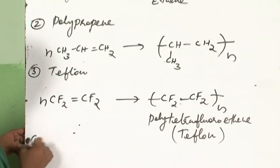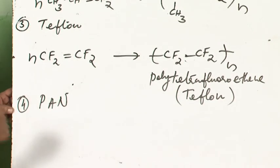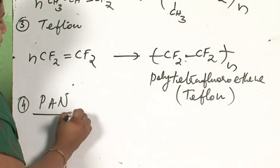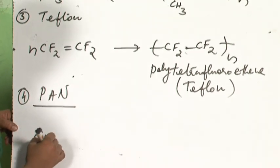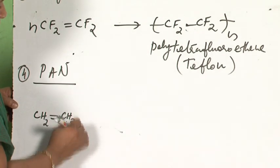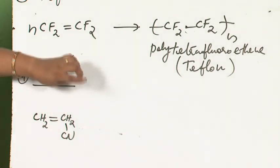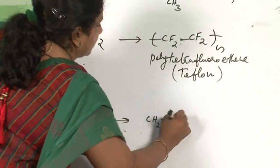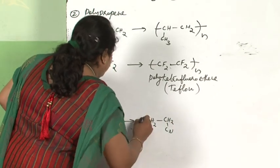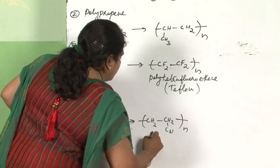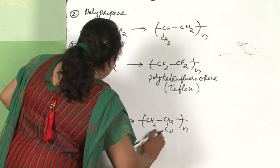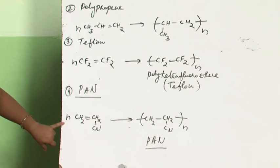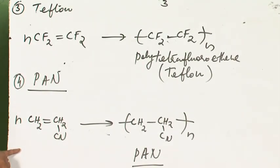The next polymer is PAN — polyvinyl cyanide or polyacrylonitrile. The monomer is vinyl cyanide (acrylonitrile): CH2=CH-CN. When N molecules polymerize, you get -[CH2-CH(CN)]n-, which is polyvinyl cyanide or polyacrylonitrile (PAN). This is also a simple addition polymerization.